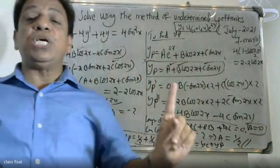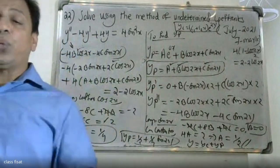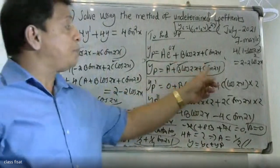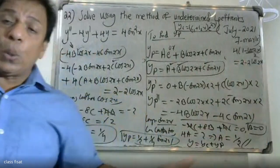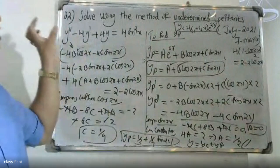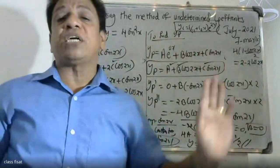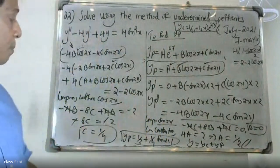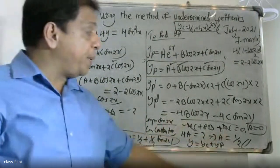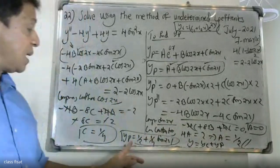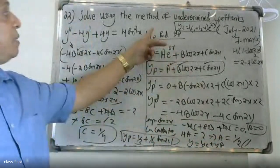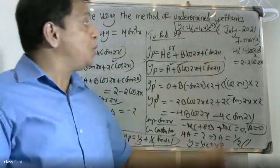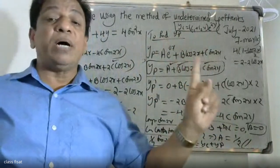To summarize: we chose yp = A·e^(0x) + B·cos2x + C·sin2x, differentiated to get yp' and yp'', substituted into the equation, compared coefficients, and found C = 1/4, A = 1/2, B = 0. The final answer is y = (c1 + c2·x)·e^(2x) + 1/2 + (1/4)sin2x.